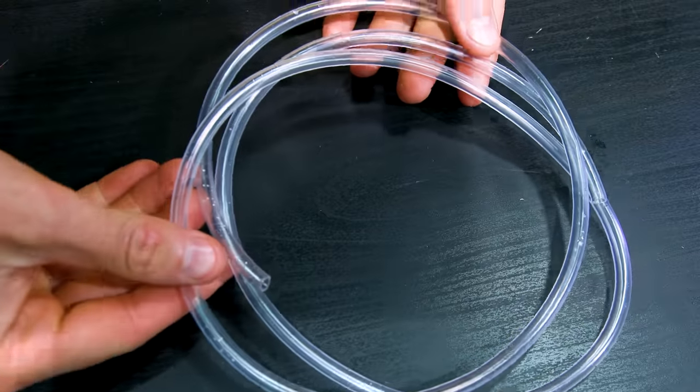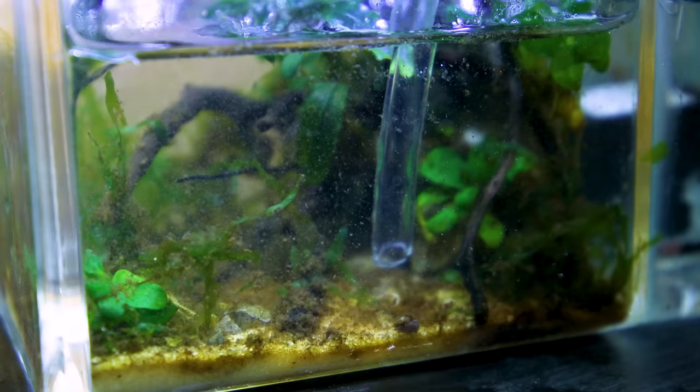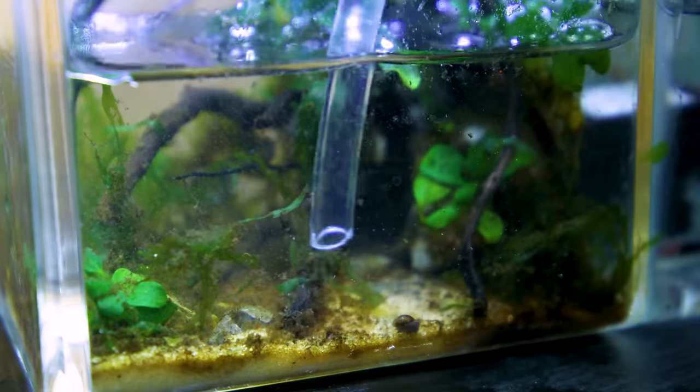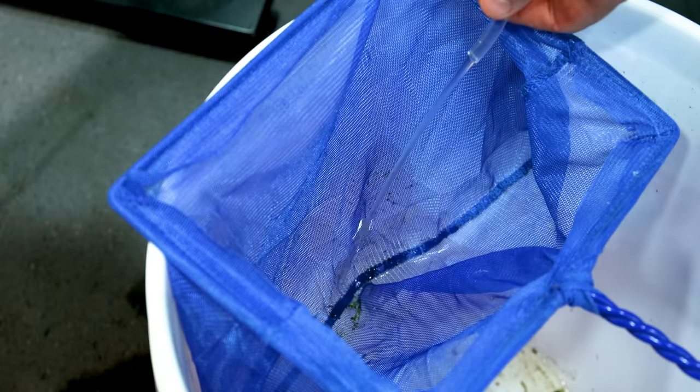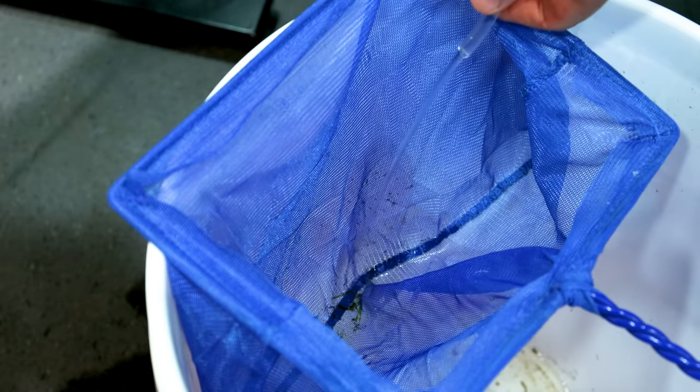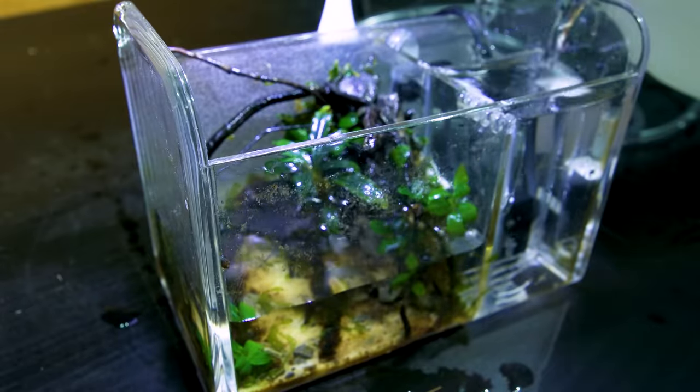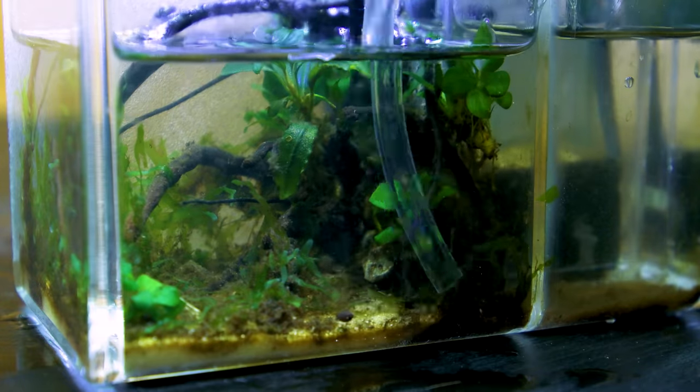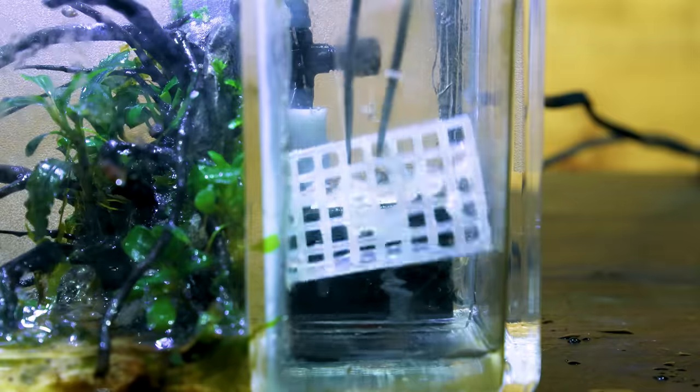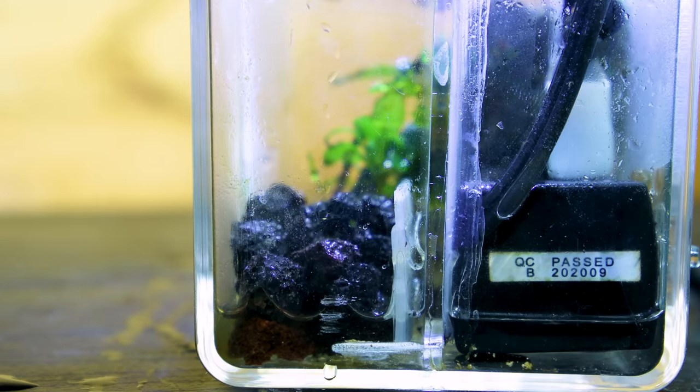I let everything settle so I could easily remove debris, algae, and mulm with an airline tube. I got a siphon going and drained the water through a net in case I accidentally got a snail in the process. Due to the small volume of water, I had to drain and fill it back up several times to remove as much debris as possible.